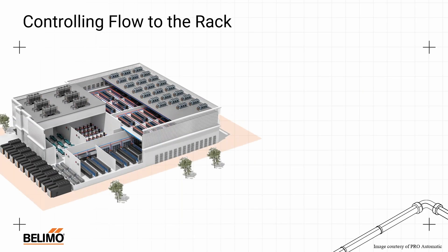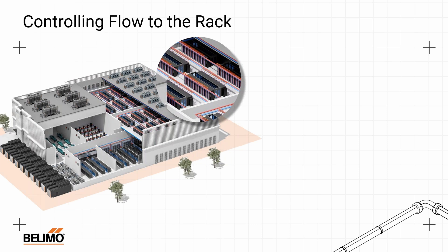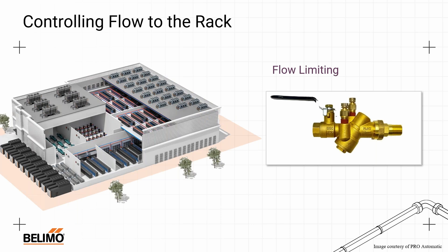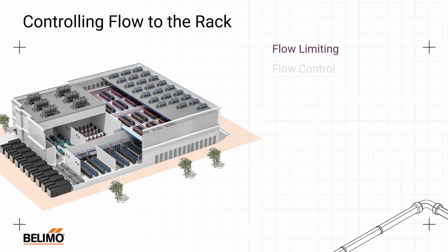Let's talk about controlling flow to the rack, because there are a few options. We have a header with fluid coming in, then some kind of control device going to the rack. The simplest option is to put a flow limiting device on there. If you know your rack requires, say, 10 gallons per minute, you get a flow limiting device set for 10 GPM, install it on your loop, and that's the simplest way. It doesn't provide feedback, it's not terribly versatile, but it does an excellent job of maintaining specific flows — our low-tech solution.